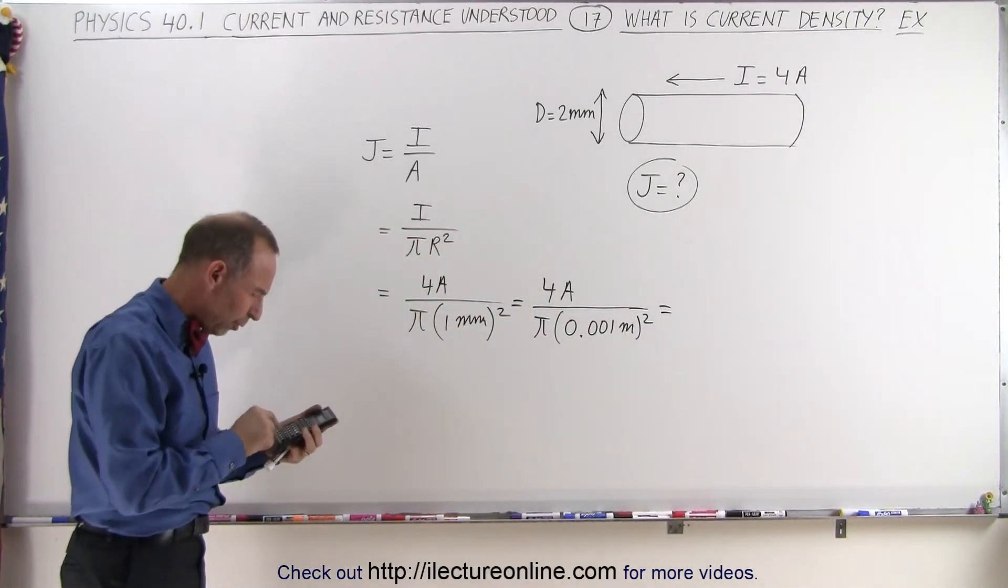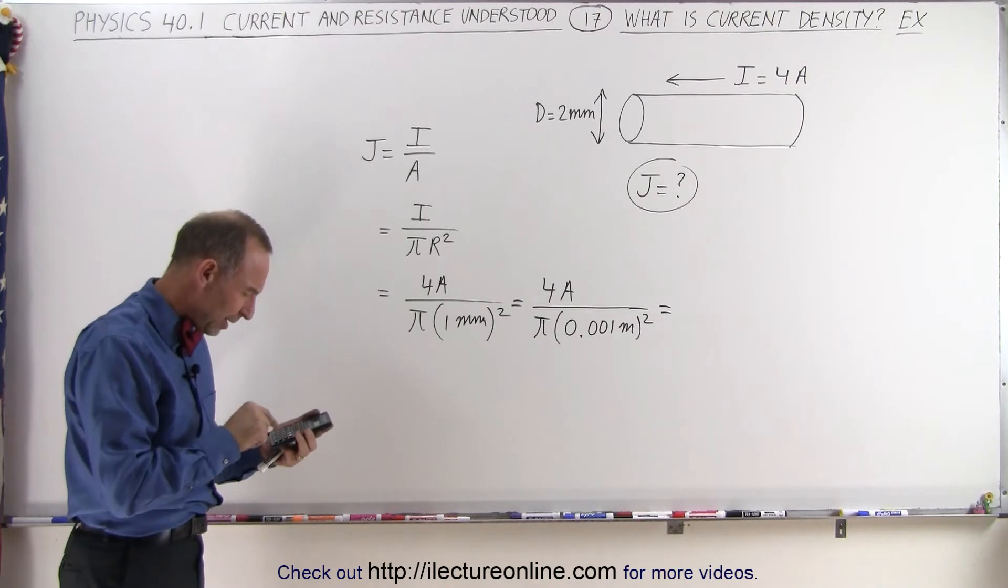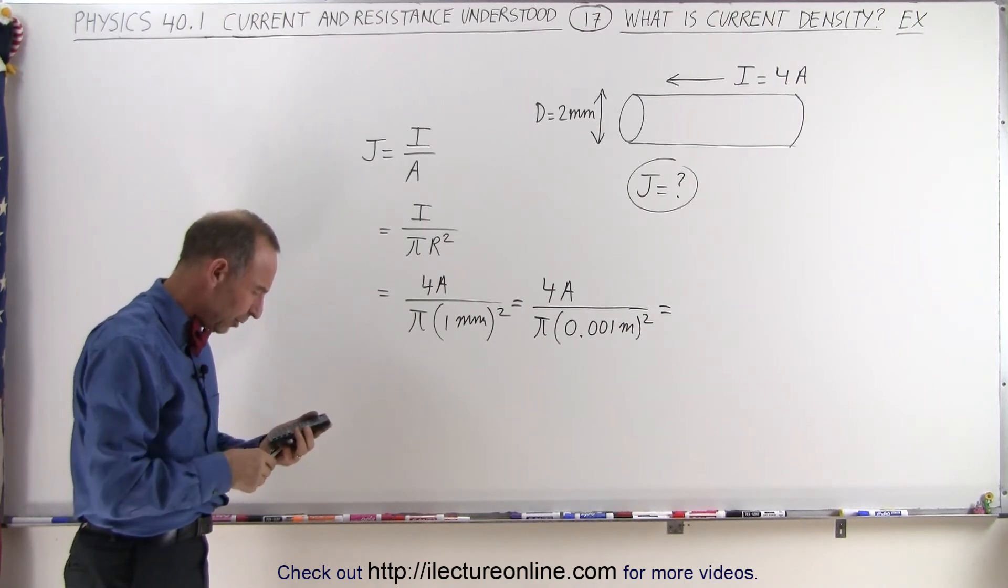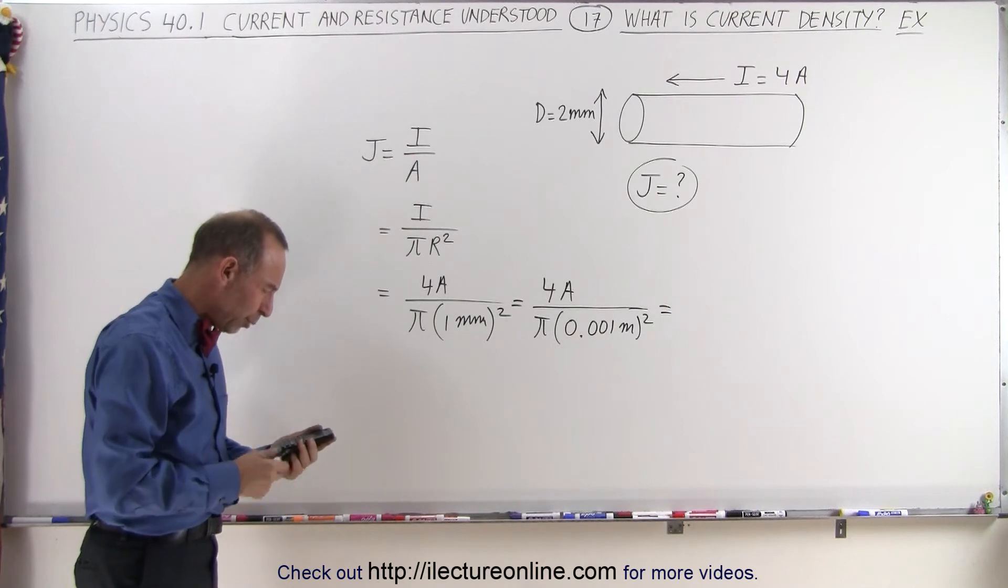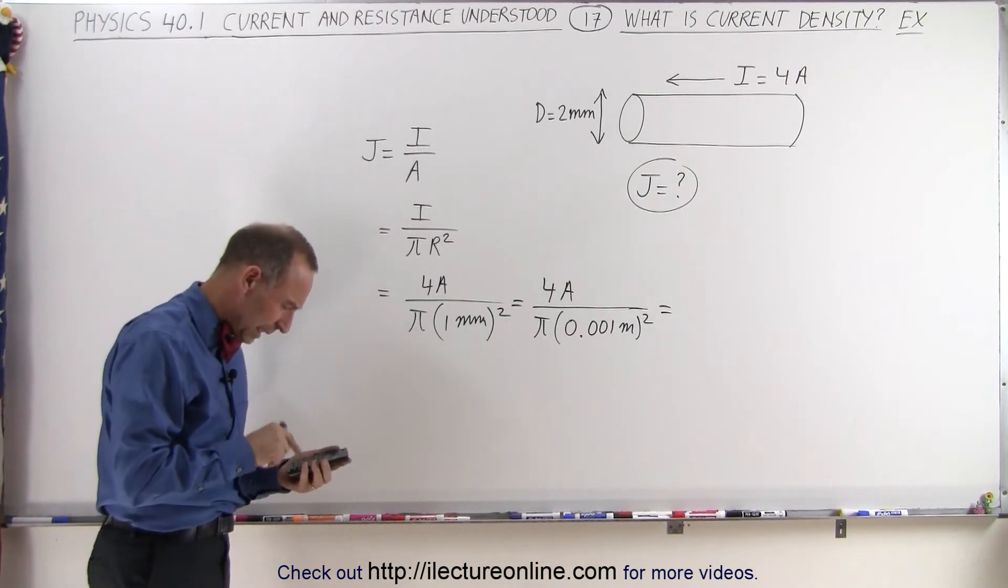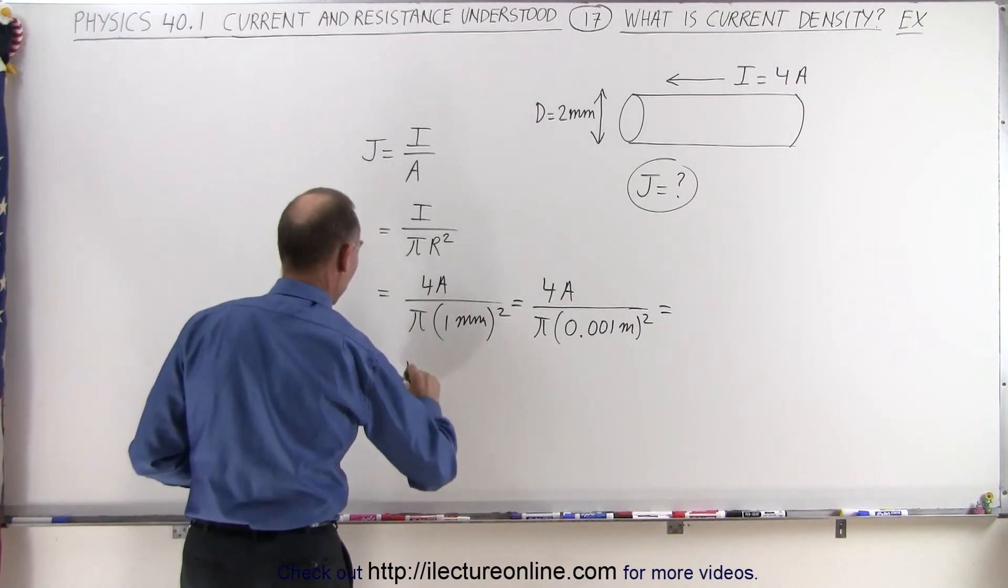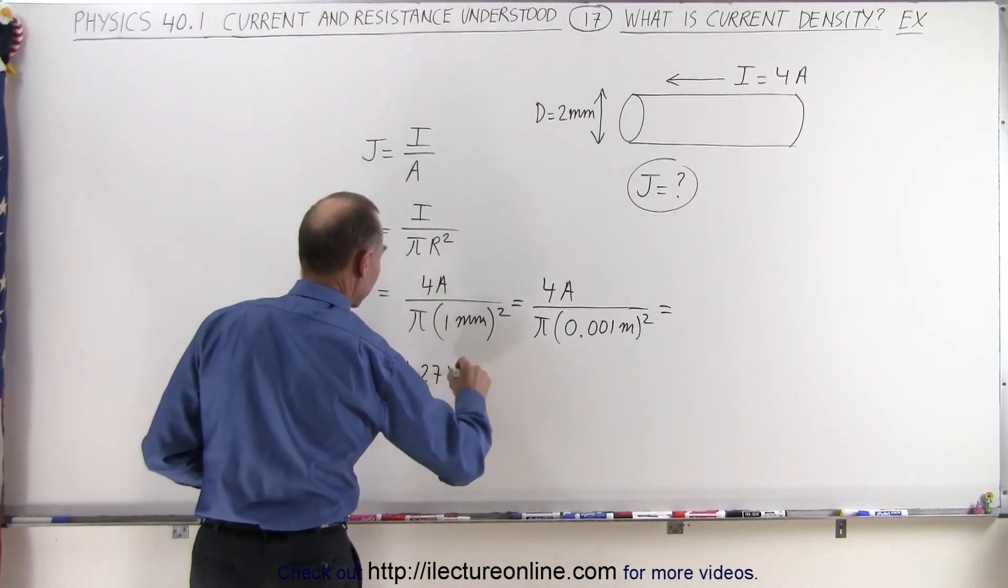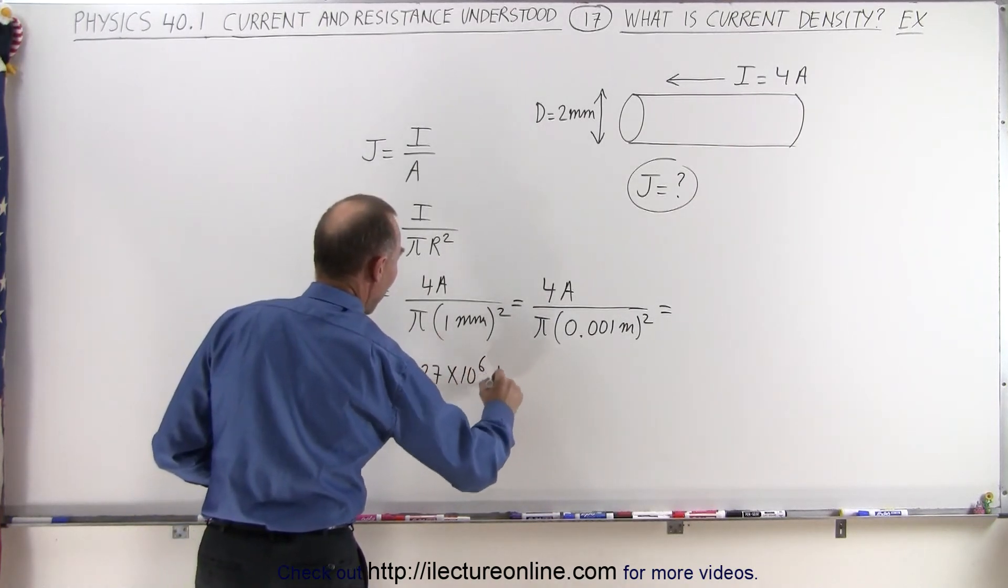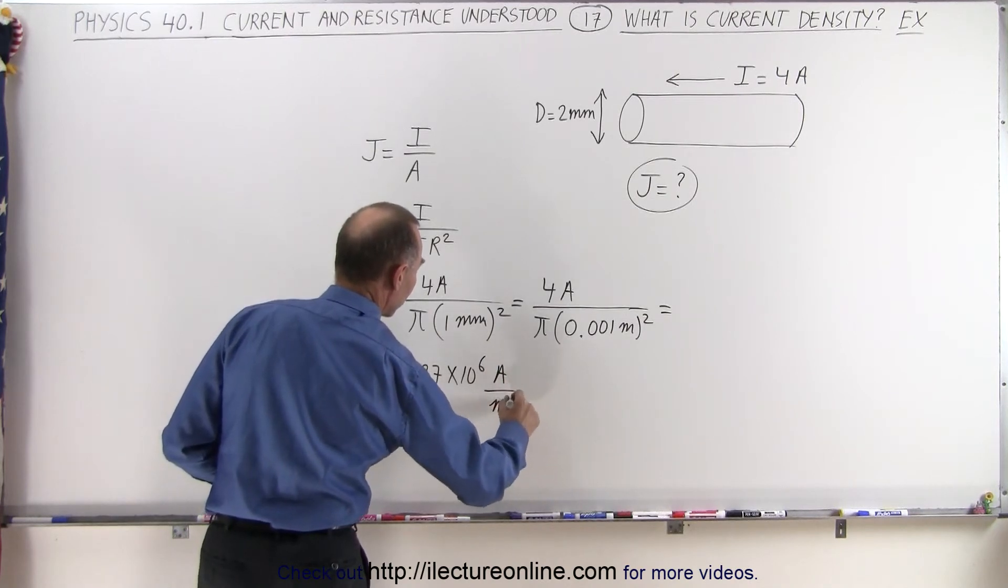So that's 4 divided by pi divided by 0.001 squared equals, and notice it's 1.27 times 10 to the sixth. So that would be equal to 1.27 times 10 to the sixth amps per square meter.